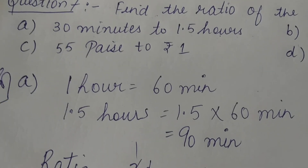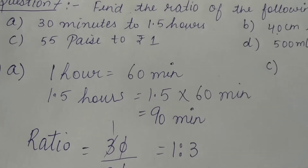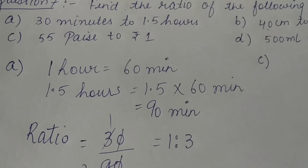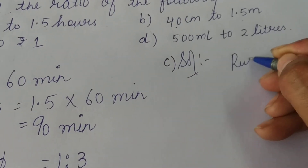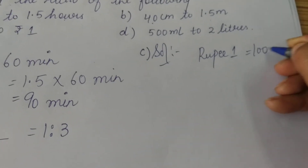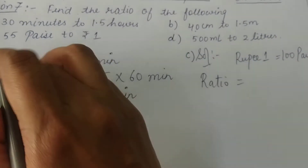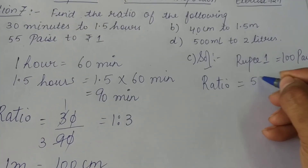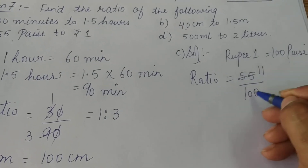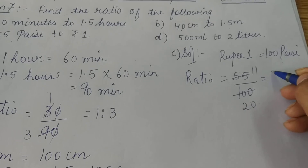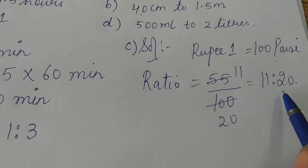Part C is 55 paise to rupee 1. Here also the units are different, so I will convert rupee 1 into paise. Since 1 rupee is equal to 100 paise, we need to find the ratio of 55 paise to 100 paise. Simplifying: 5 ones are 5, 5 twos are 10, giving us 11 is to 20. So the ratio is 11 is to 20.